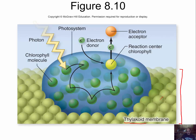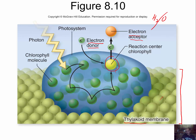Coming back to this earlier diagram: here is our reaction center chlorophyll. It receives the energy, and one electron from that molecule gets excited to a higher energy state and gets captured by an electron acceptor molecule. Now that we have that void, the entire structure is oxidized, and we need to replace that electron. A donor molecule provides the replacement electron. If this is oxygenic photosynthesis, then that donor molecule is water — and when we split water, we get our oxygen from there.